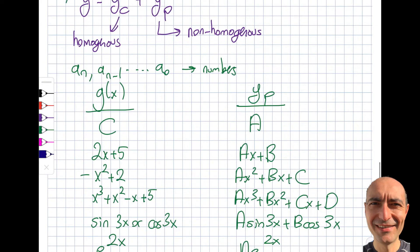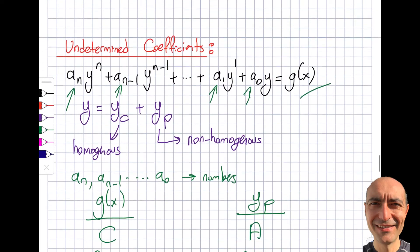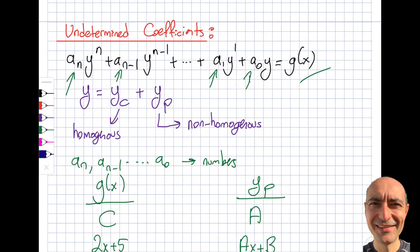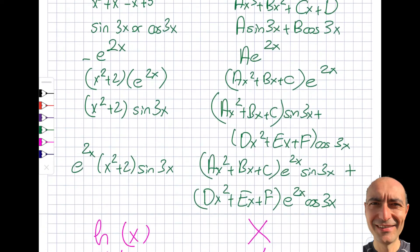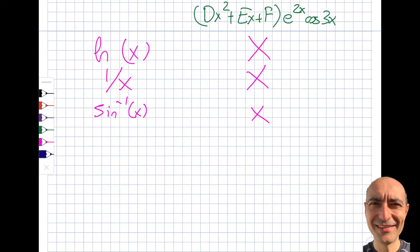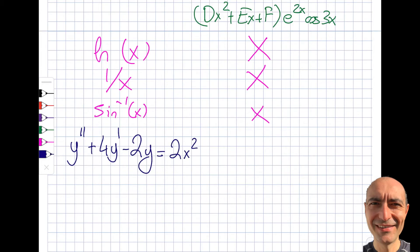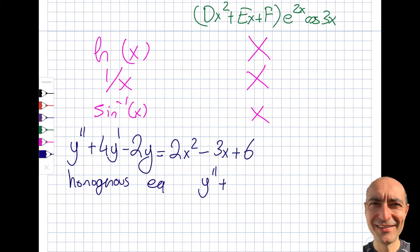The next step is to illustrate how to actually solve an equation using this approach. Note that I still need to go back to the homogeneous equation first to find the complementary solution, and then add the non-homogeneous particular solution component. Let me start with an example: y'' + 4y' - 2y = 2x² - 3x + 6. This is a linear, second-order, non-homogeneous equation.